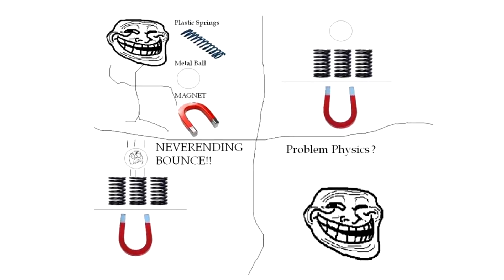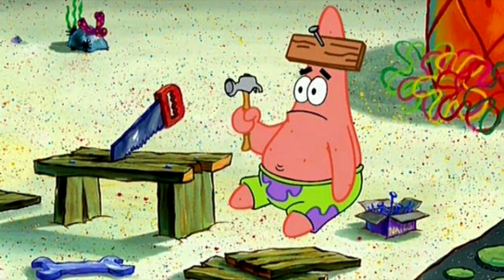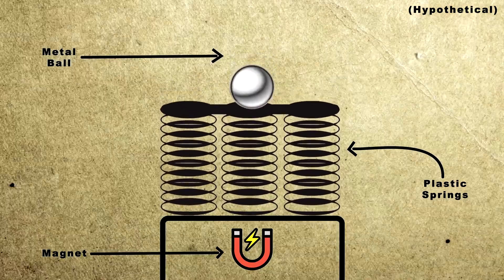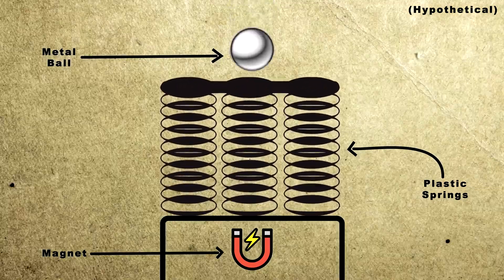Magnets again. It looks kind of cool, except it doesn't work. According to this, we could use a magnet placed beneath plastic springs and a steel ball to achieve an infinite bounce.